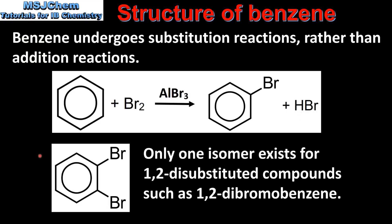The final piece of chemical evidence for the structure of benzene is that only one isomer exists for 1,2-disubstituted compounds such as 1,2-dibromobenzene. If benzene contained alternating single and double bonds we'd expect there to be two isomers produced in the reaction with bromine. However, only one isomer exists.